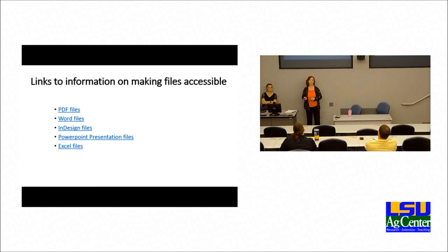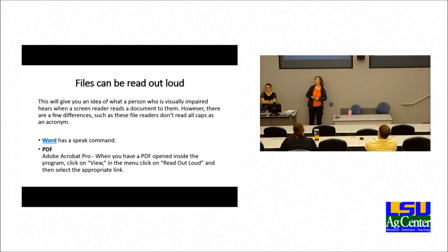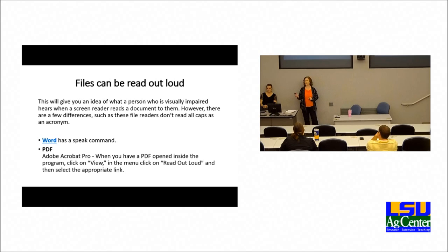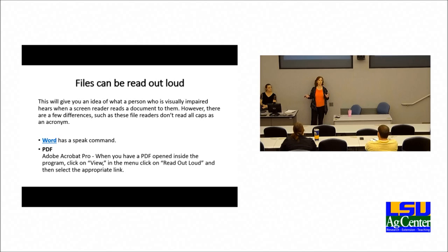You can read files out loud using Word or Adobe — it gives you an idea of what a person who is visually impaired hears when a screen reader reads a document to them. However, these file readers don't read all caps as an acronym the way screen readers do. In Word, I have a link to directions on how to access the speak command. In Adobe Acrobat Pro, you can click View, then Read Out Loud, and select the appropriate option and it will read the document to you.